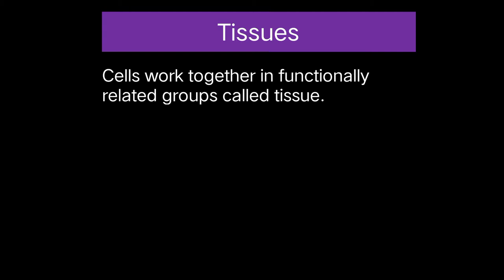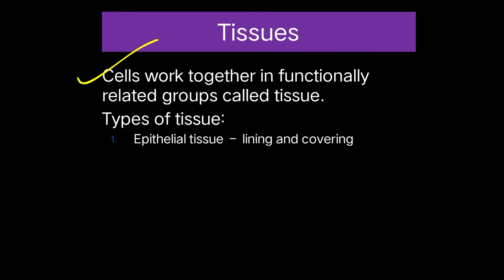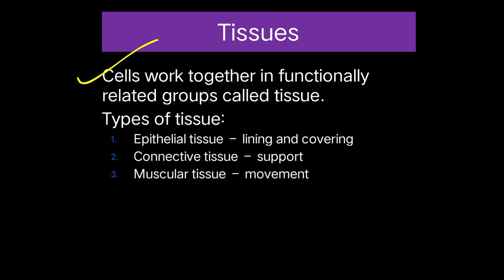Today we are going to discuss about tissue. First, we will discuss epithelial tissue. Tissue refers to cells working together in functionally related groups — all the cells are functionally the same. The types of tissue are: epithelial tissue, which lines and covers organs; connective tissue, which supports organs; muscular tissue, responsible for movement; and nervous tissue, which controls all these organs.